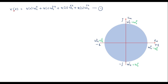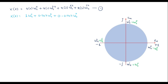Now we will find X(k) for different values of k from 0 to 3. Expanding Equation 1 further with substituted x(n) values: X(k) = 1·W_4^0 + 0.707·W_4^k + 0·W_4^(2k) + (−0.707)·W_4^(3k). We will call this Equation 2.